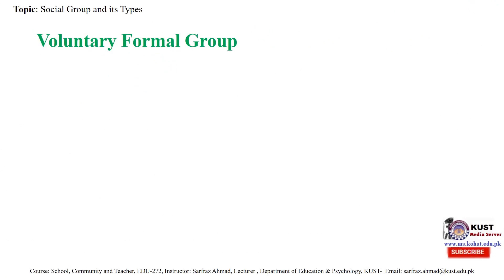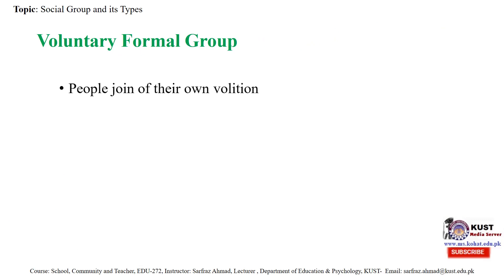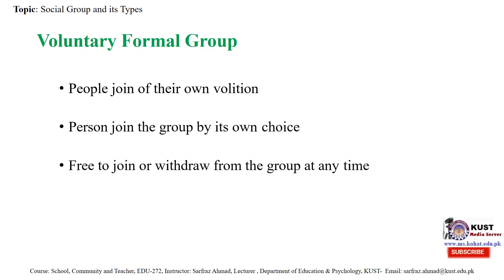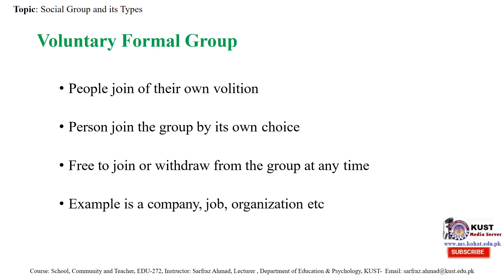Voluntary formal groups are those in which people join of their own volition — persons join by their own choice and are free to join or withdraw from the group at any time. An example is a company or job organization — in any private job you can join willingly and then leave that job without any consent.